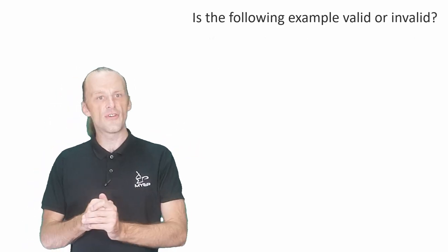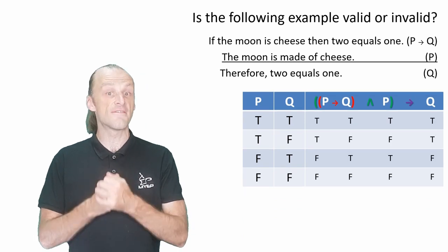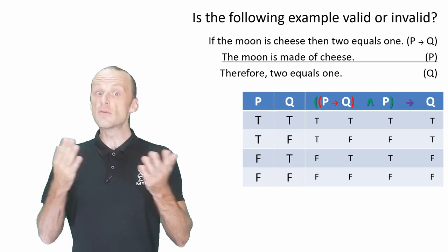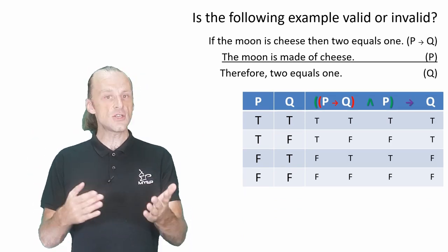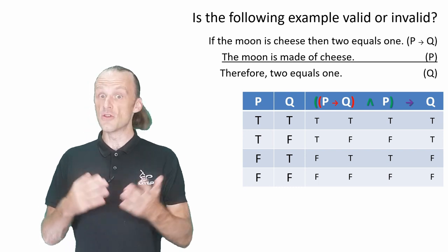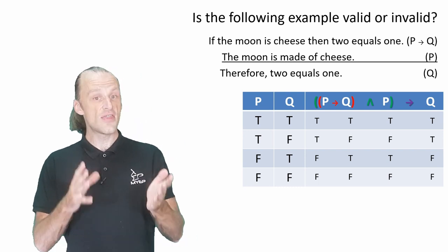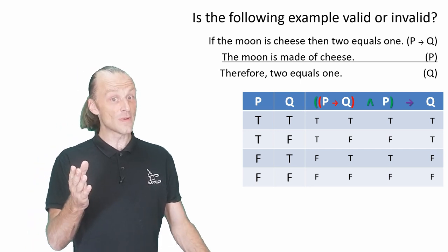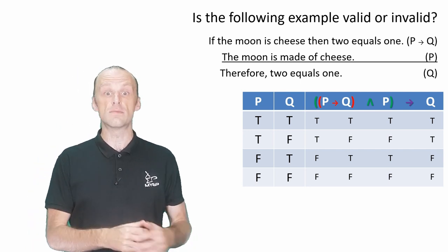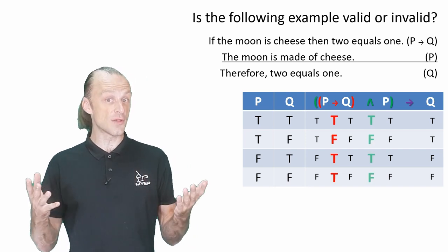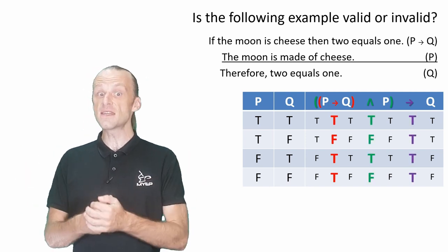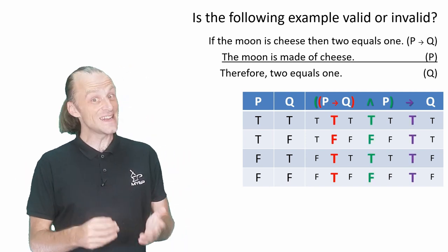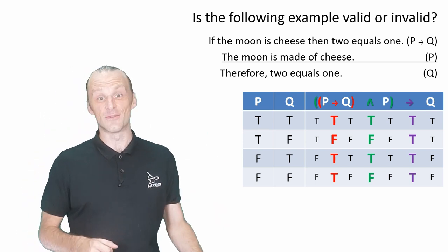Here's another example first though, is this argument valid or invalid? If the moon is made of cheese, then two equals one. The moon is made of cheese, therefore two equals one. You might recognize it already. This argument uses modus ponens, and if we work through the truth table we can see that it is valid, but clearly this is not a sound argument.